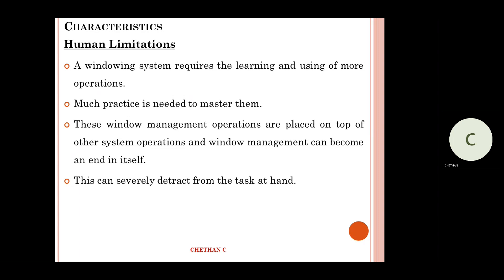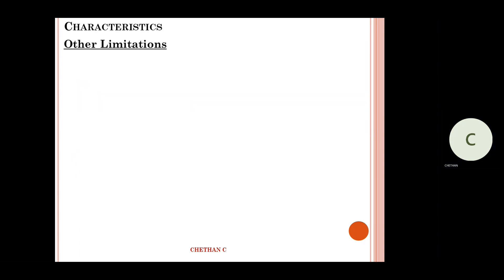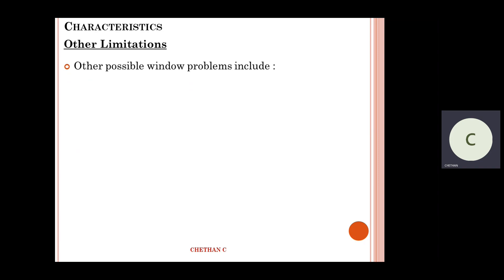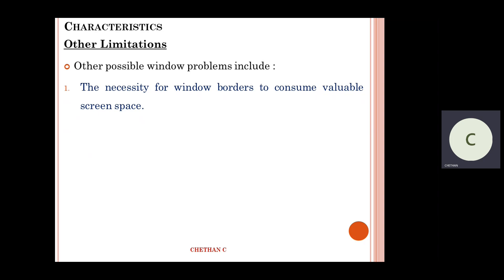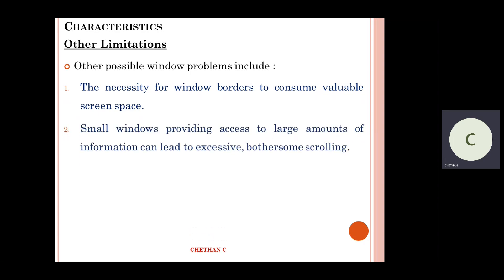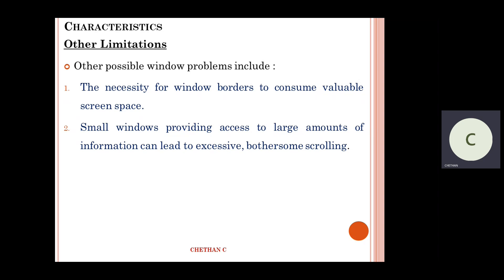Other possible problems include the necessity for window borders to consume valuable screen space. Small windows that provide large amounts of information can lead to excessive, bothersome scrolling. If the window opens very small, you need to keep scrolling because the space is very limited — whereas if the screen is big you can read it all at once.